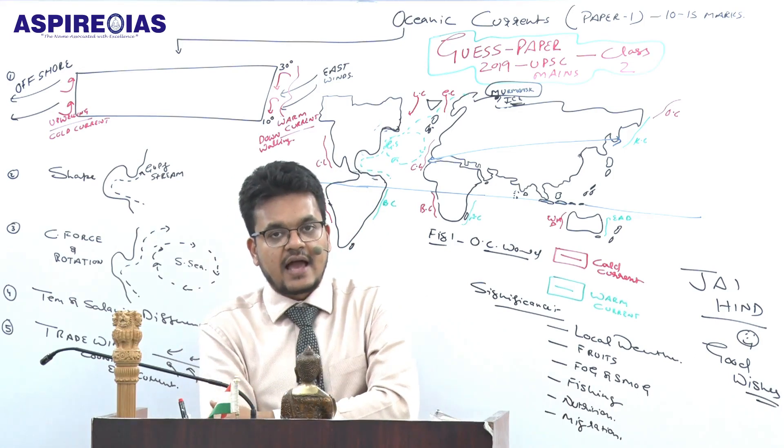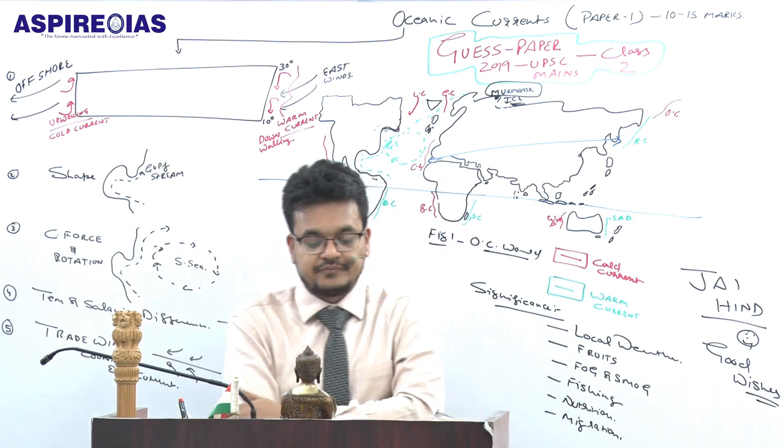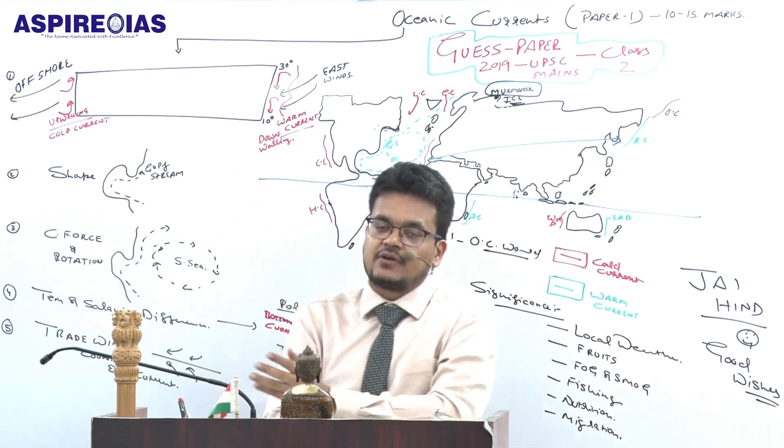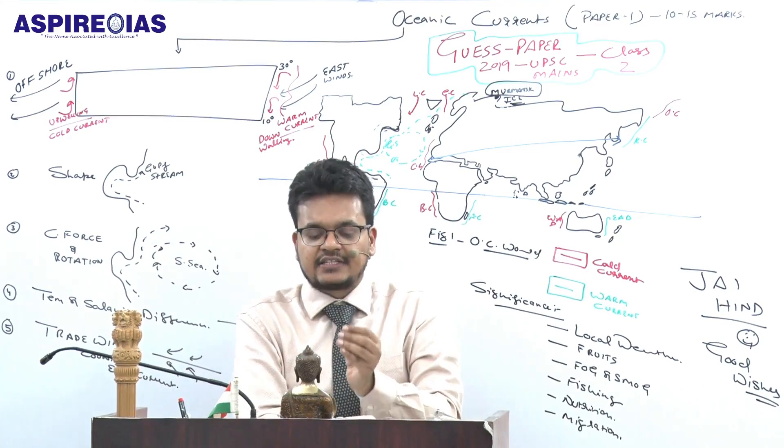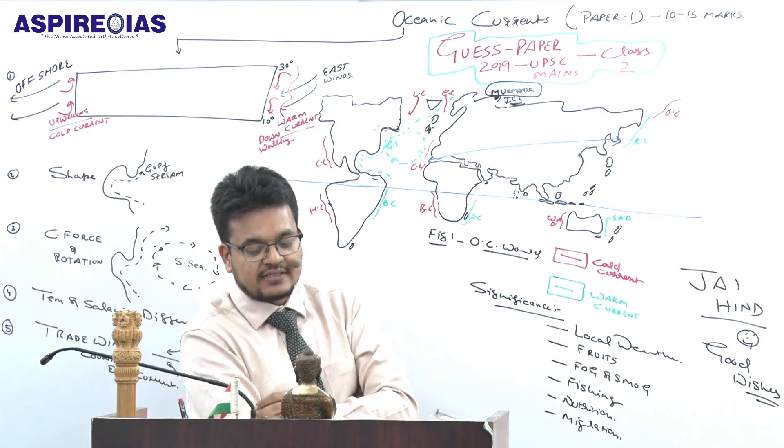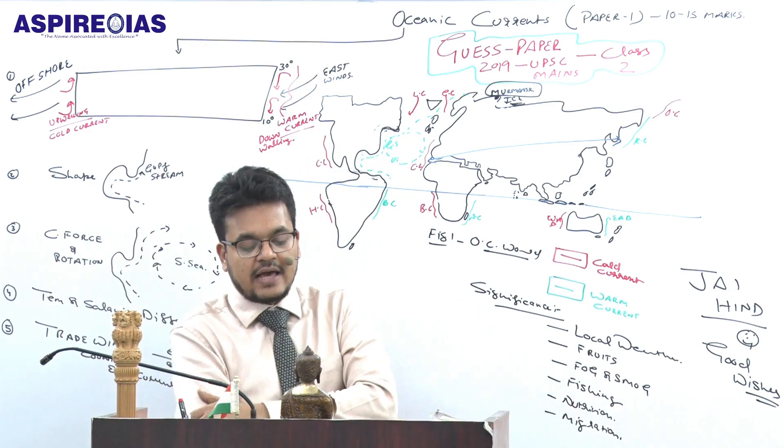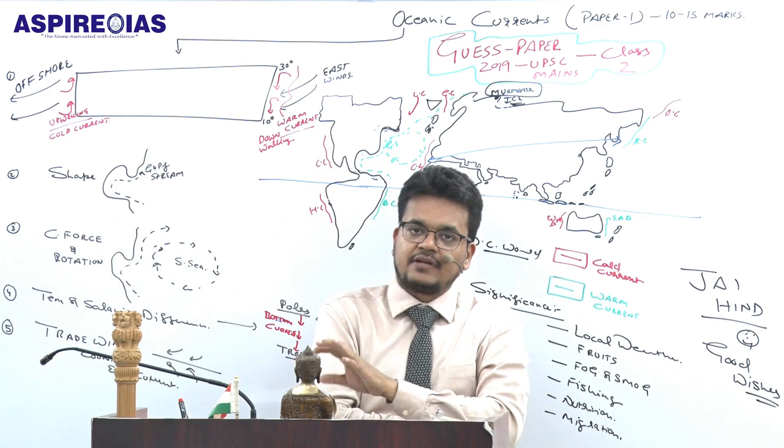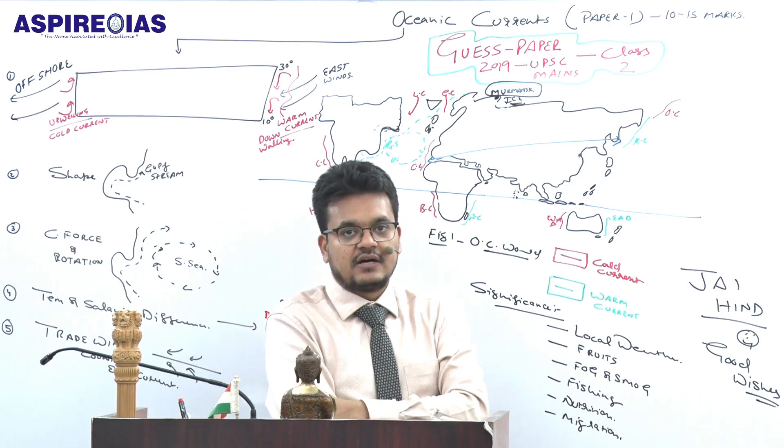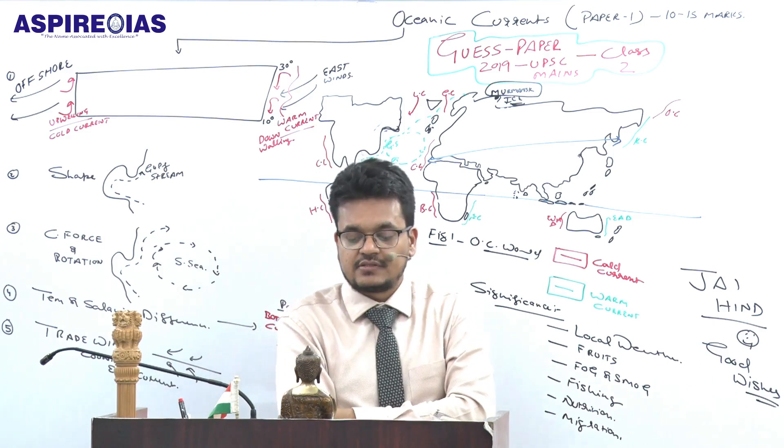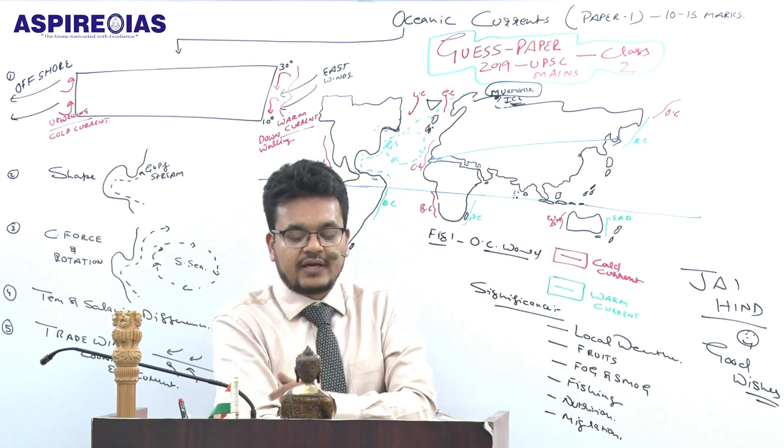The recent features of the Motor Vehicle Act, which is the amendment over 1988 legislation, are: compensation to road accident victims, cashless treatment during golden hour, interim relief to claimants through third-party insurance, compulsory insurance otherwise huge fine, and the fund can be constituted under Motor Vehicle Accident Fund.